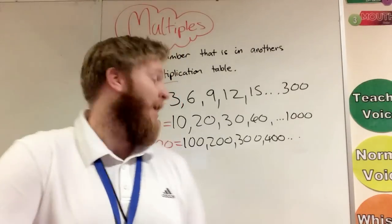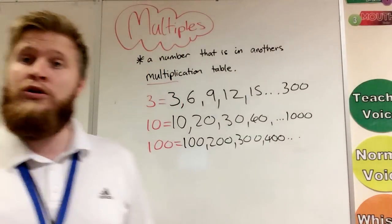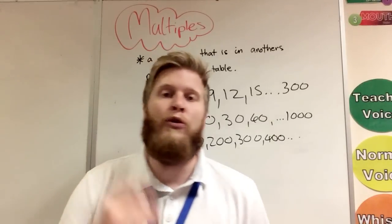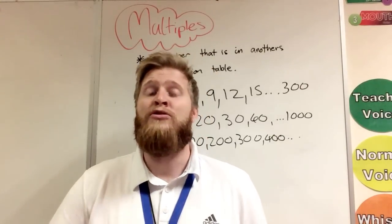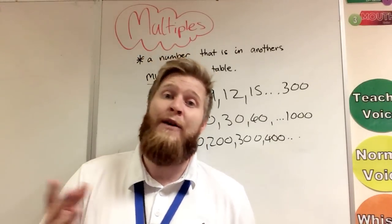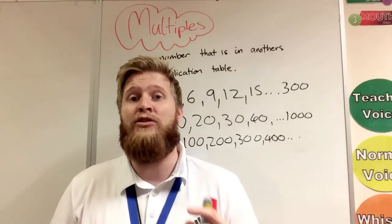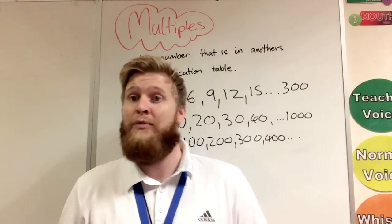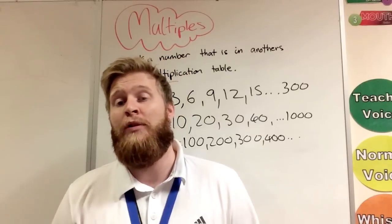There are lots of rules out there for all the different types of numbers. Things like five - multiples of five will always end in five or zero, so any number that ends in five or zero is a multiple of five.